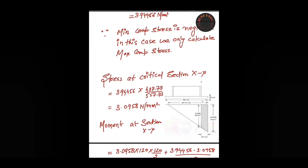The next step is to find the thickness. We identify section X-X that lies just outside the column flange. Our maximum stress is 3.94456 and this value is neglected - this part is zero. The length is 557.17 mm and the shaded projection is 120 mm. We find the stress at this point by linear interpolation, getting 3.0958 N/mm².